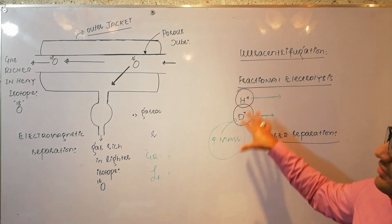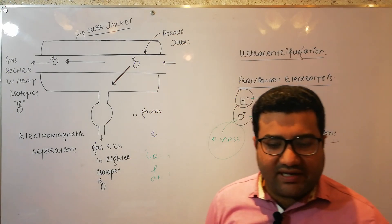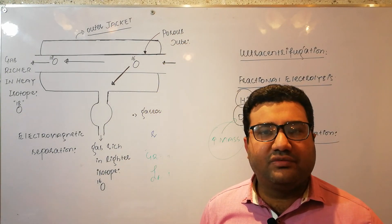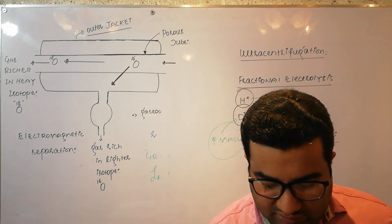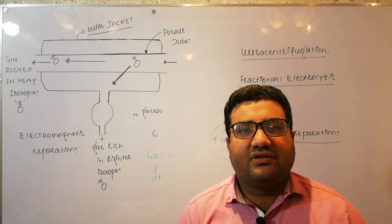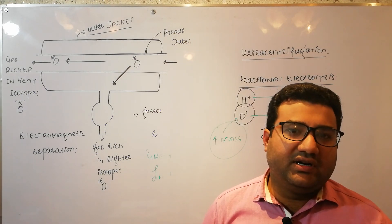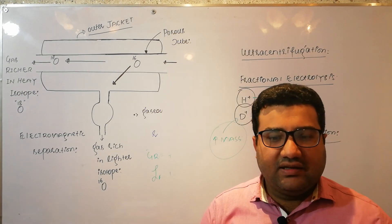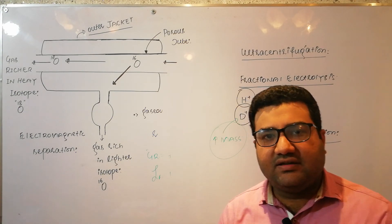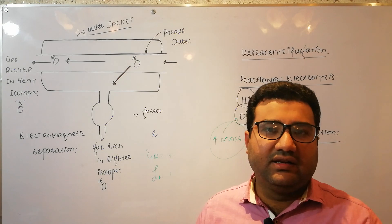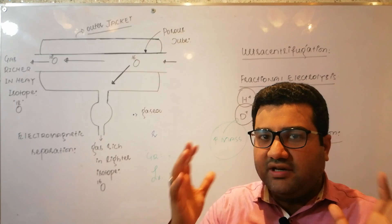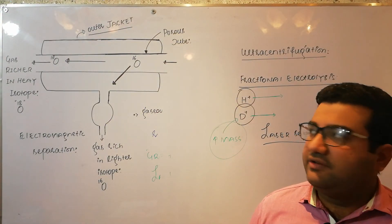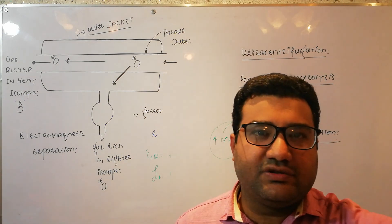These were some methods of the separation of isotopes, and all of them are based on the physical properties of isotopes. Mass spectrometry was discussed in great detail because it required it, but in all other cases only the main concept and main idea is required, which I have given you. So that was all about the methods of separation of isotopes. Thank you so much.